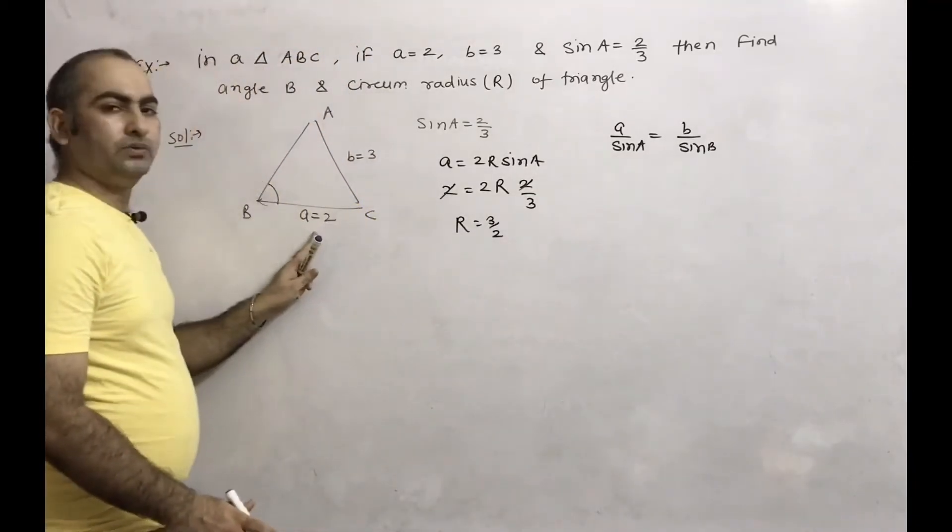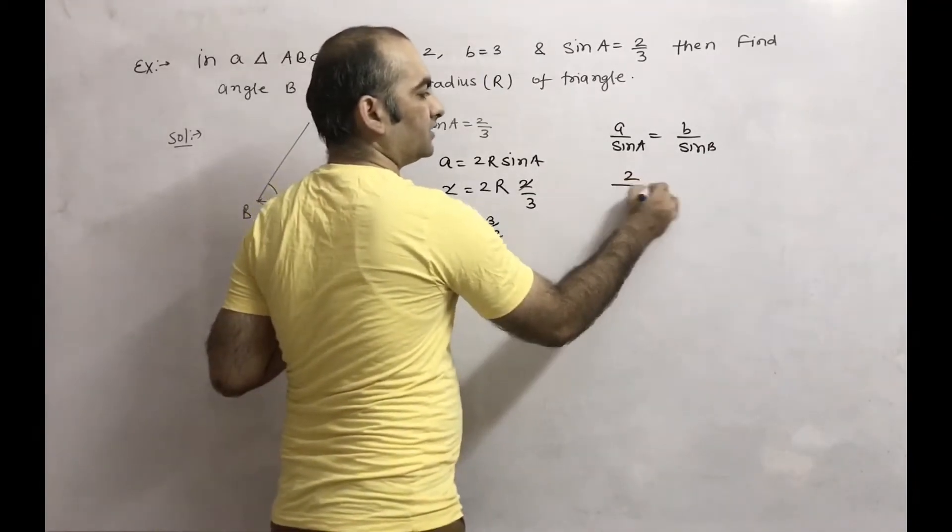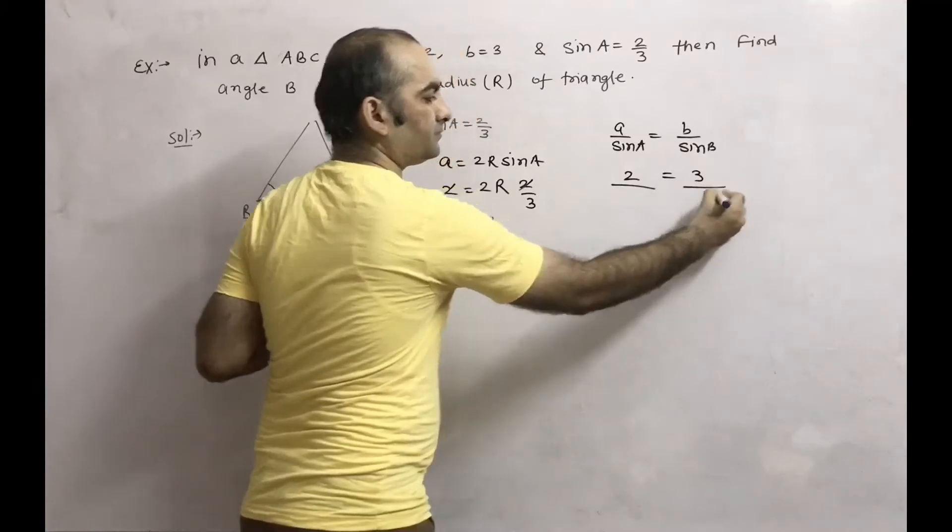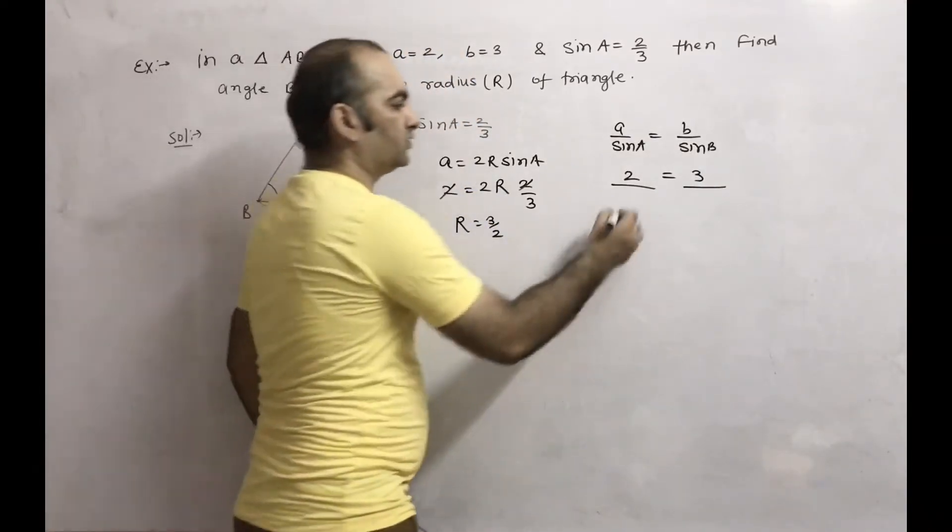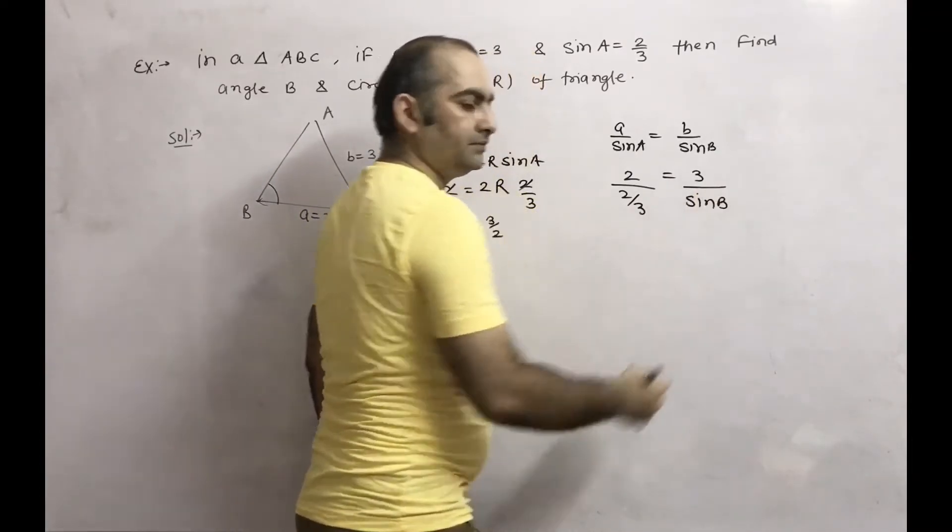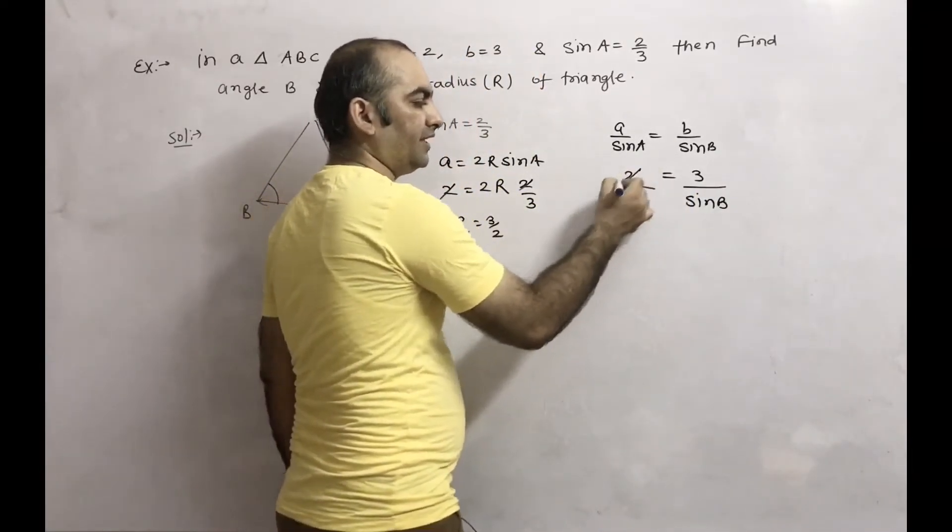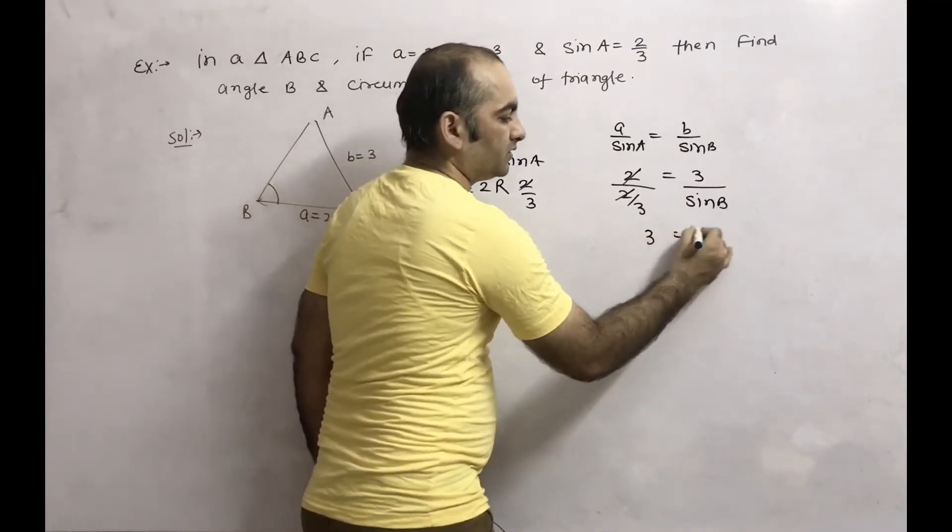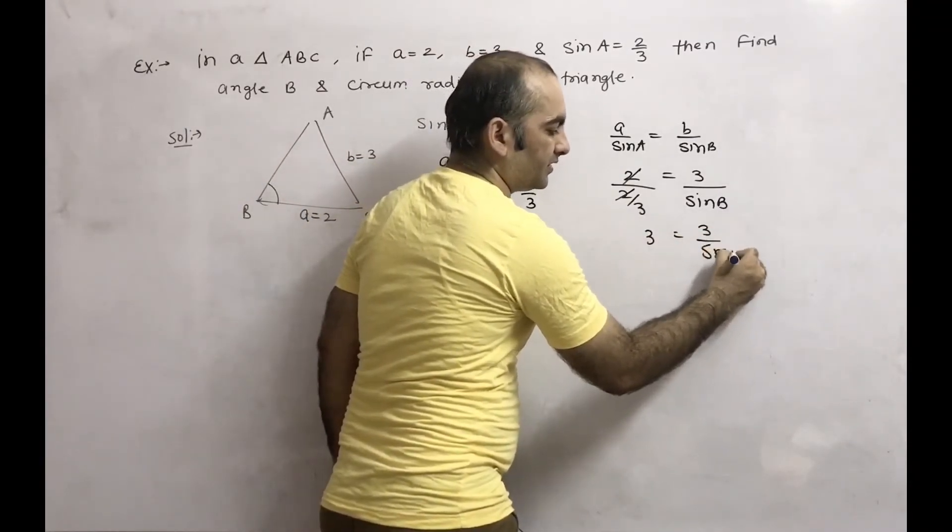The value of a is 2, b is 3, sine A is 2/3. So 2 over (2/3) equals 3 over sine B. The 2s cancel, so 3 equals 3 divided by sine B.